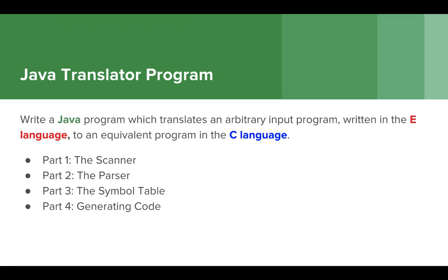In this assignment we're going to ask you to write a Java program that translates programs written in the E language to an equivalent program in the C language. The E language is a language introduced for the purposes of this assignment. This assignment is broken down into four parts: completing the scanner, using the grammar to build the parser, building and using the symbol table with scope, and finally producing C code from the original E code.